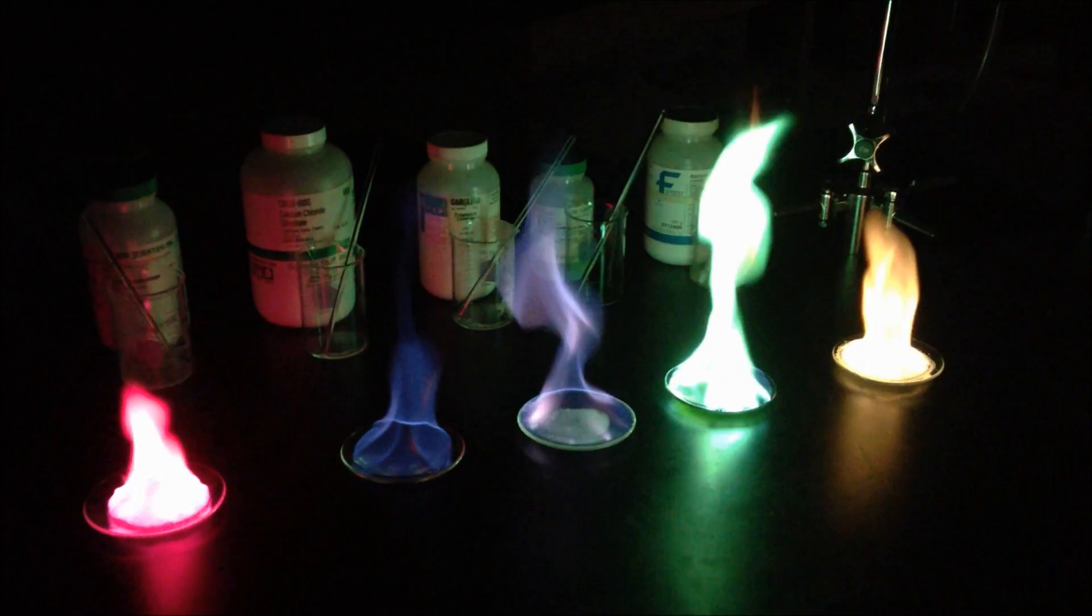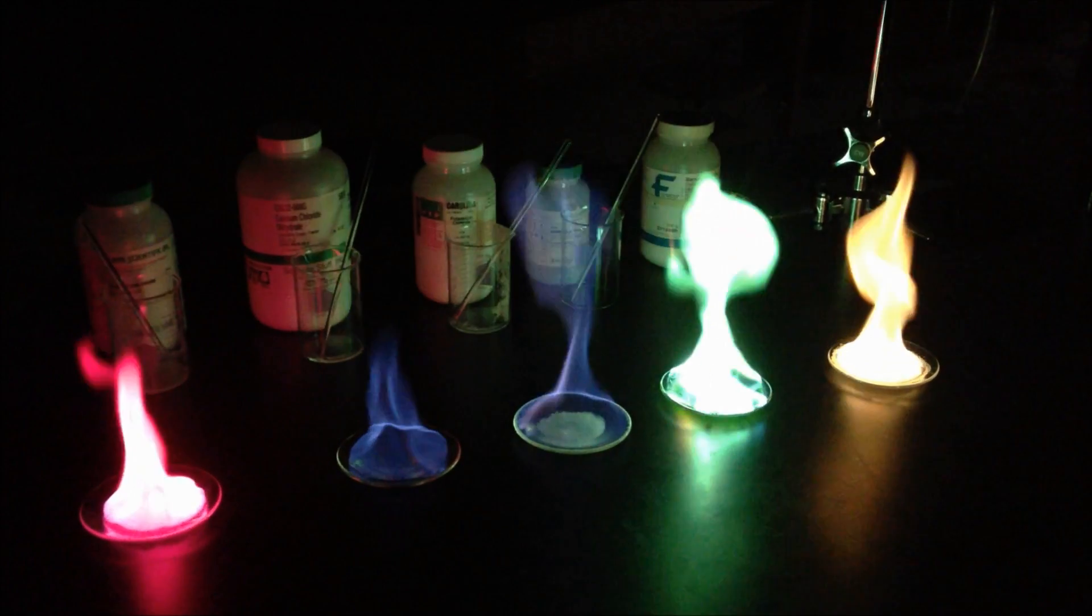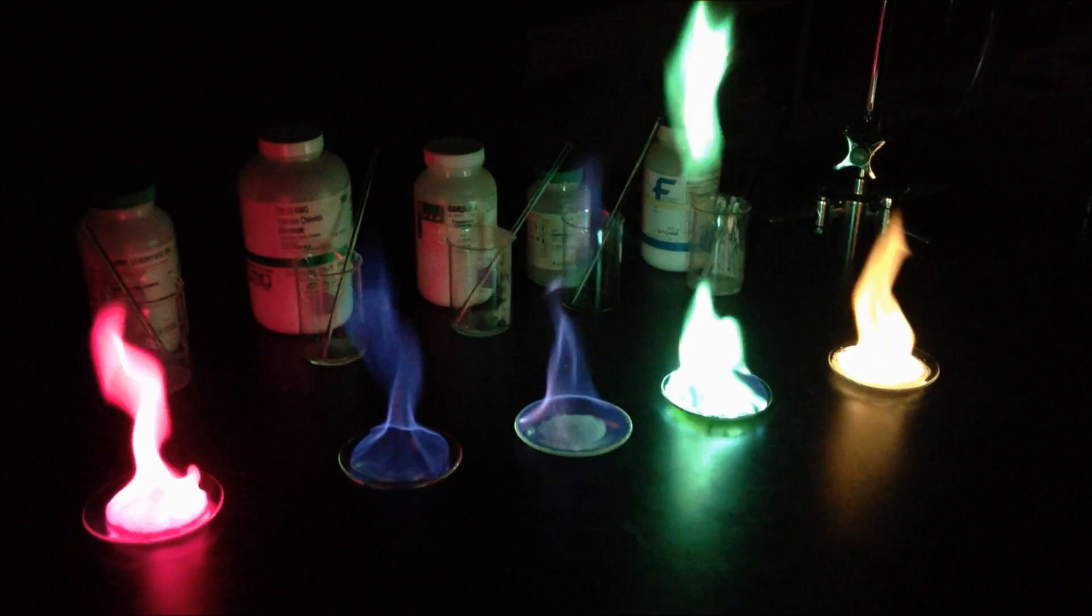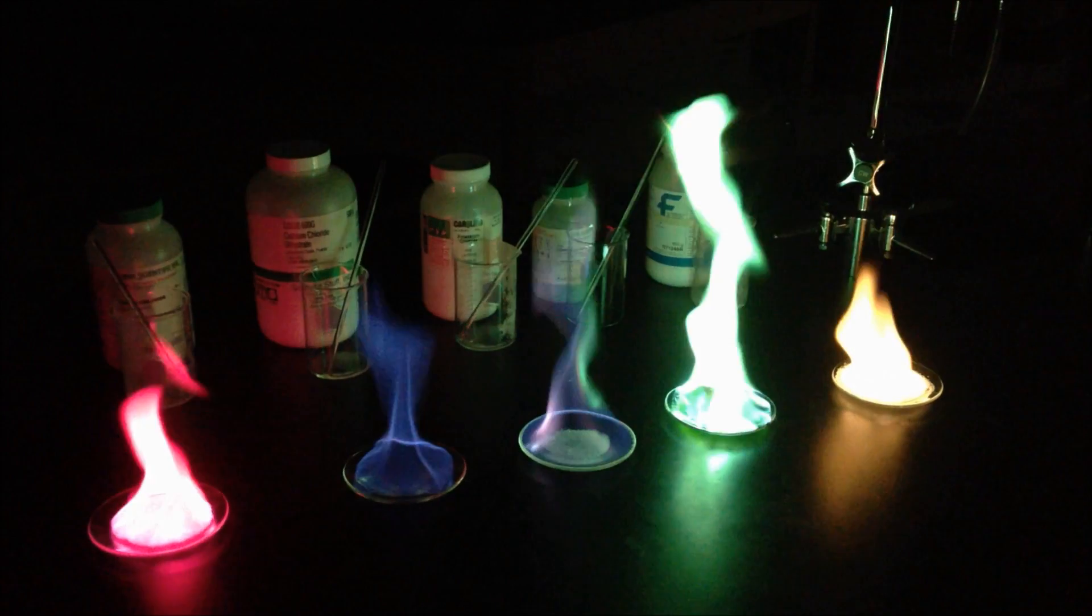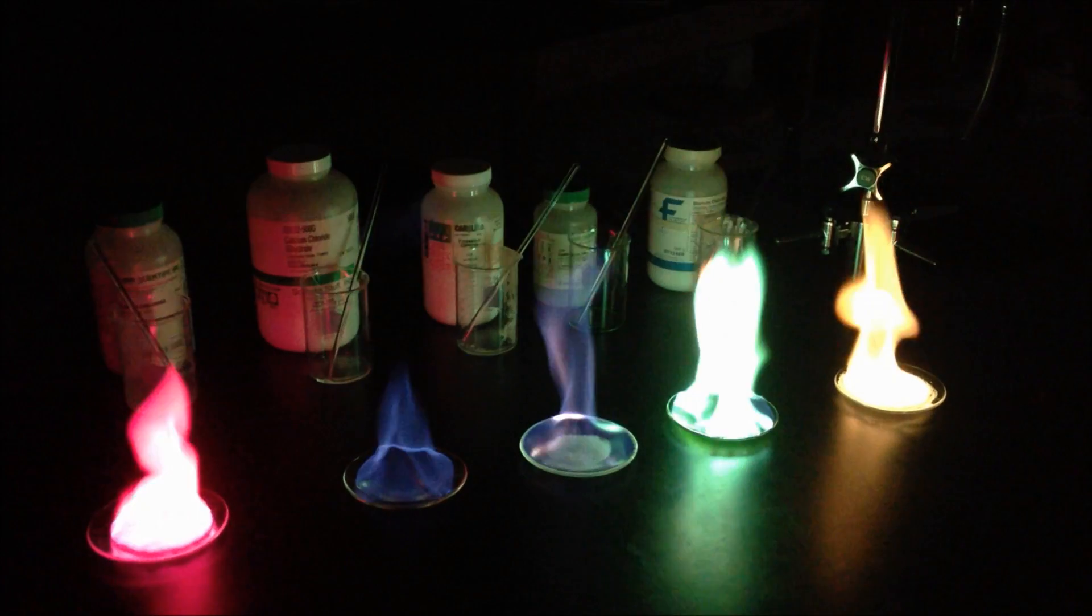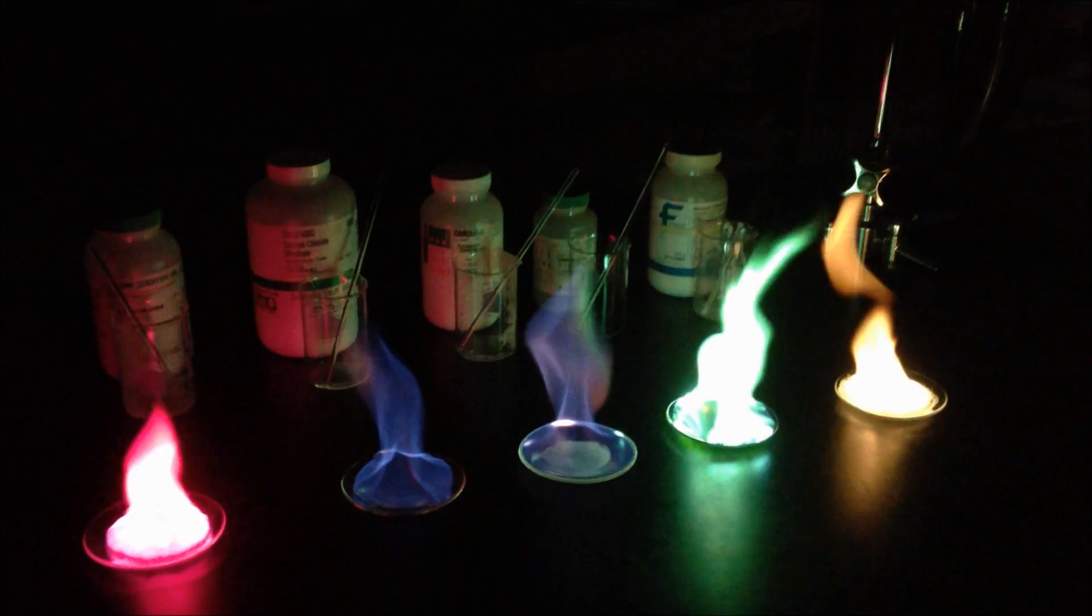I found out that the colors that fireworks make are created by the use of metal salts. When metal salts are ignited, they release energy in the form of light. The color they give off depends on the length of the wavelengths.